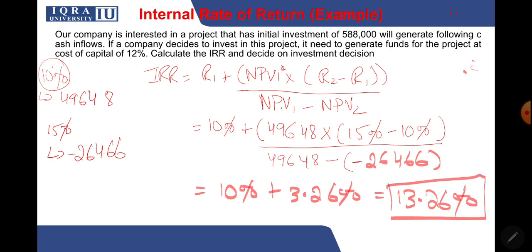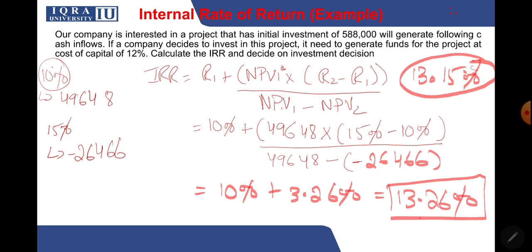The internal rate of return is similar to YTM studied in bond valuation — YTM tells you the total return an investor gets if they hold a bond till maturity. IRR similarly tells you the total return you will get from this project given all the cash flows, expressed as a percentage. If you calculate this using the Excel IRR function, the exact value is 13.15 percent, and our approximation of 13.26 percent is close enough.